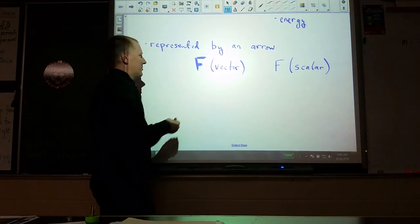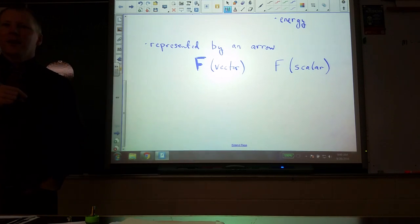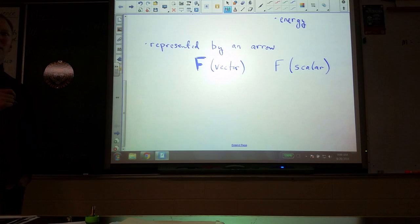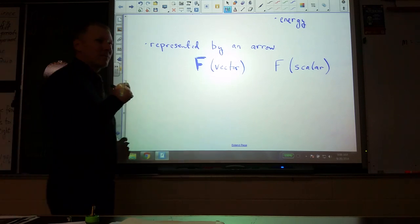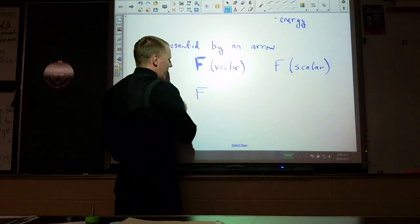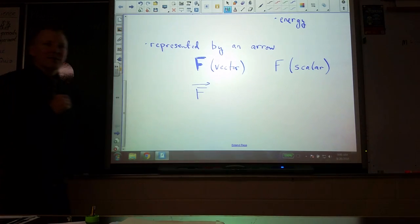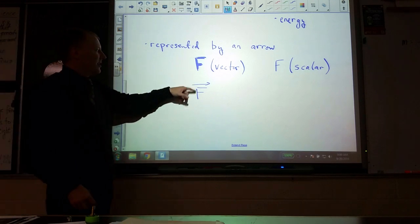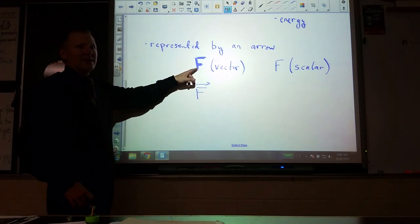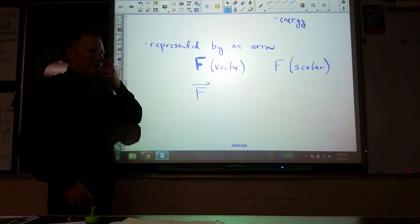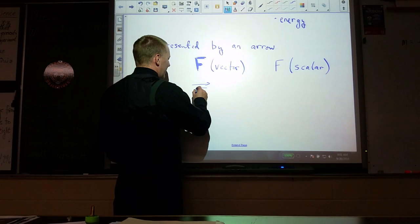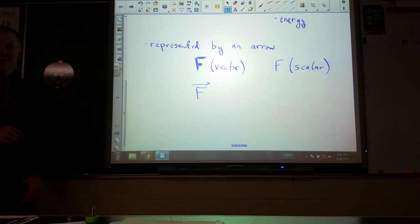There's another way - we put an arrow over it. That is also a vector quantity. Books are bolded because it's easier than putting an arrow, but when we're writing it, we'll just put the arrow over it because indicating something is bolded is hard to do by writing.